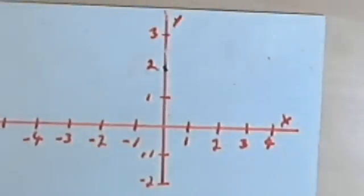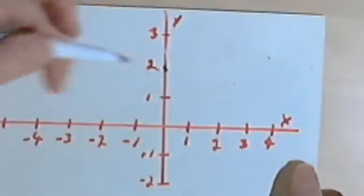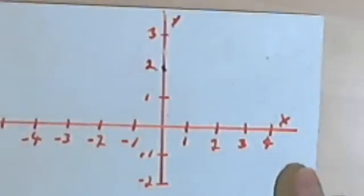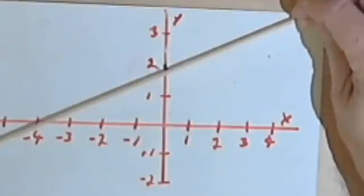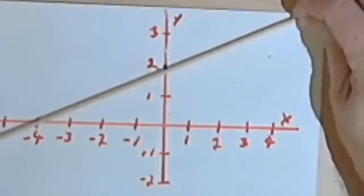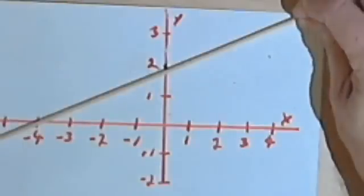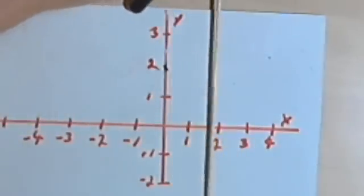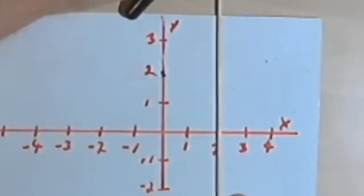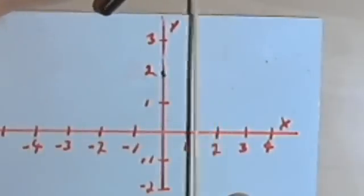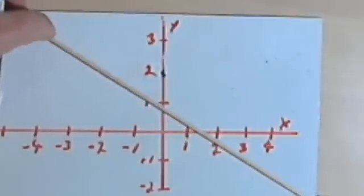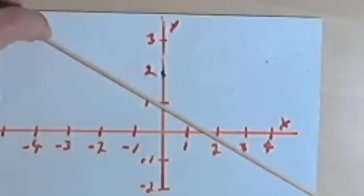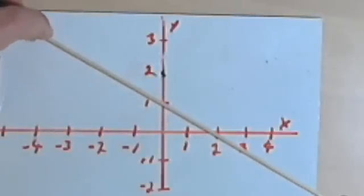Basically, if you've got a graph with an x-axis and y-axis and you've got a straight line, then you're going to have a linear function. The only kind of straight line that's not going to be a linear function is a vertical line — a line that goes straight up and down — because a vertical line would not pass the vertical line test. Any other straight line is going to be linear and a function because it will pass the vertical line test.